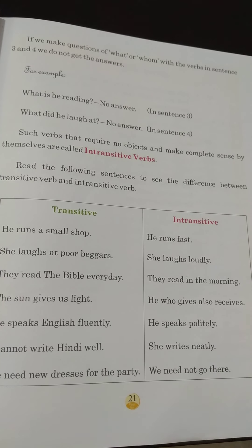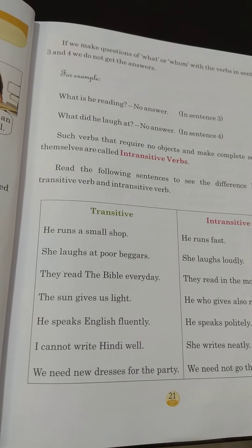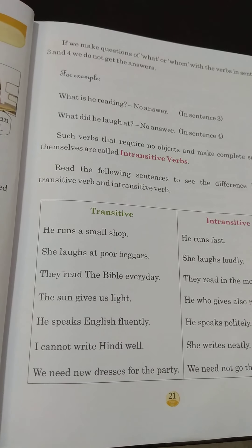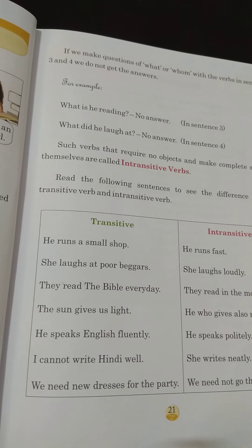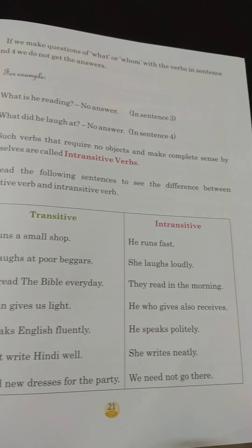Read the following sentences to see the difference between transitive and intransitive verbs. Transitive examples: 'He runs a small shop.' 'She laughs at poor beggars.' 'They read the Bible every day.' 'The sun gives us light.' 'He speaks English fluently.' 'I cannot write Hindi well.' 'We need new dresses for the party.' In all these sentences, if we ask questions, we get answers — so these are transitive verbs.